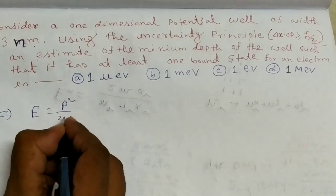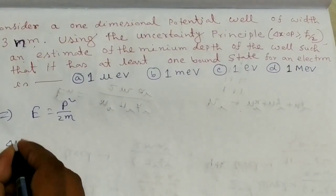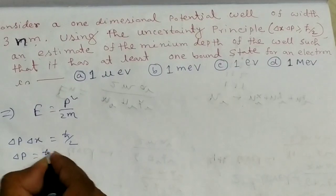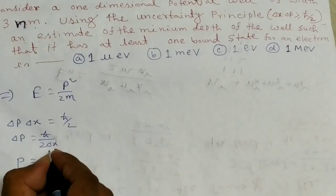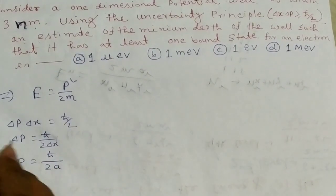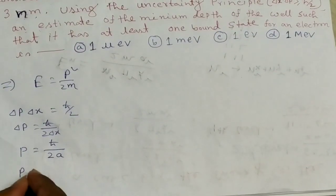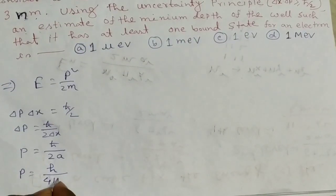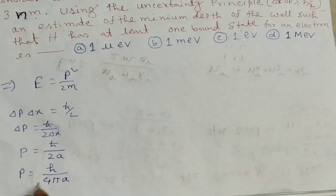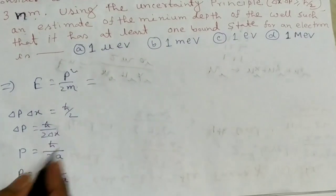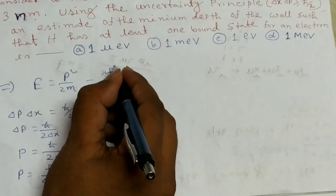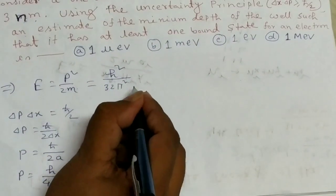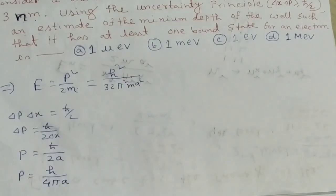We calculate the energy: E equals p² / 2m. From the uncertainty principle, Δx · Δpx equals h-bar/2, so Δp equals h-bar / (2·Δx). If the width is a, then p equals h-bar / (2a) = h/(4πa). Substituting into E: E equals h² / (16π²·a²) / (2m) = h² / (32π²·m·a²).